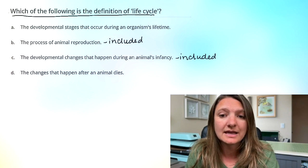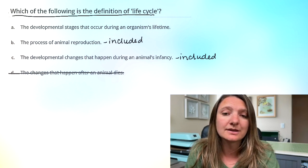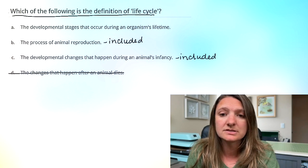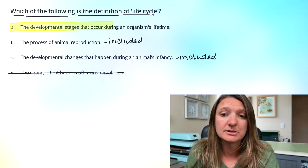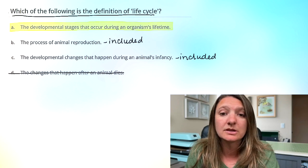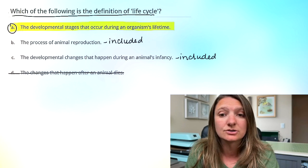And D, the changes that happen after an animal dies. The key word here is 'life,' so death is not included. Since all of the developmental stages are included in option A, our answer is A: the developmental stages that occur during an organism's lifetime.